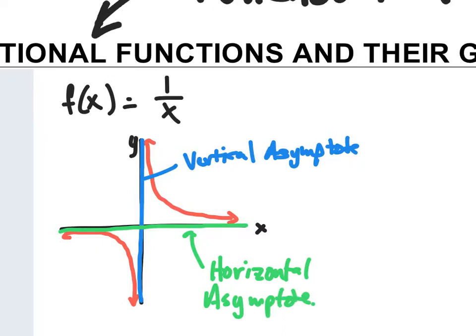The horizontal asymptote is right here. This graph is going to get infinitely close to the x-axis but it will never touch. Same thing on the other side — as x approaches negative infinity, it'll get infinitely close to this line but never touch. This is the basic rational function, and we call this a parent function. It's important that we know what this graph looks like.